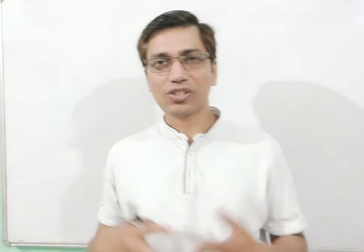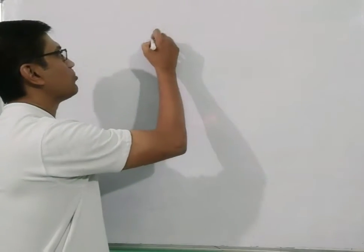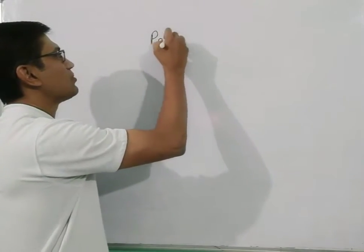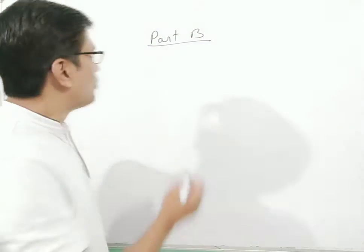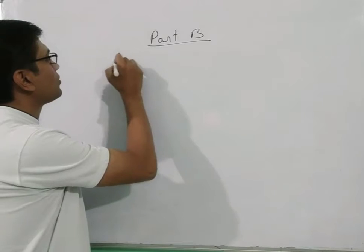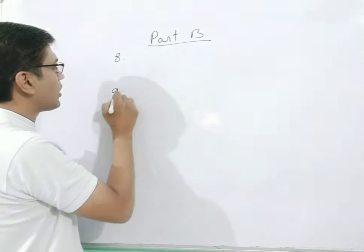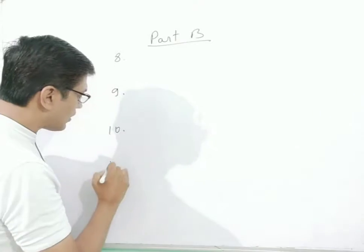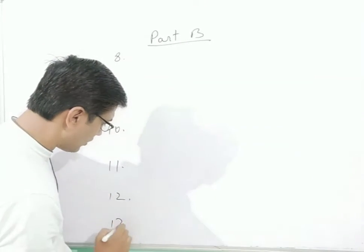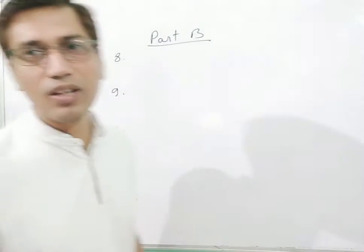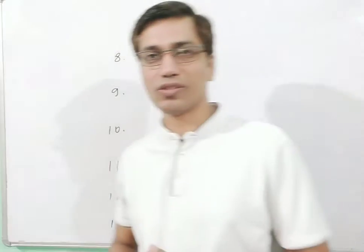Now let us talk about Part B, which is the subjective portion. The questions start from question number 8, then 9, 10, 11, 12, and 13. This is the whole pattern — from 8 to 13 we have six questions in total.